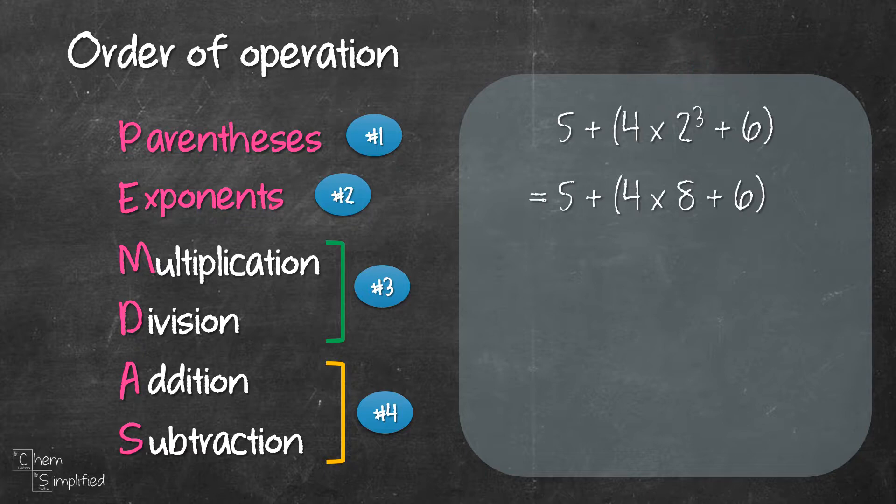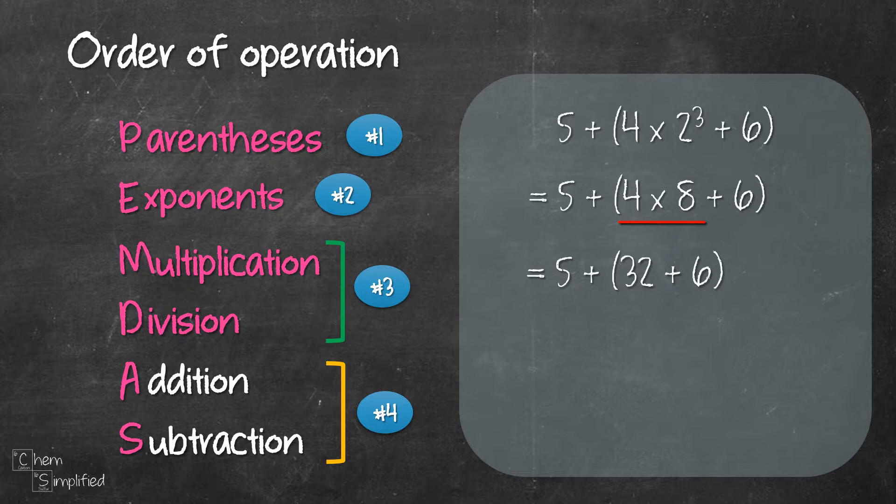So now we have 5 plus open bracket 4 times 8 plus 6. Now the third step, we look for multiplication and division. So inside the bracket we have 4 times 8 plus 6. So we will need to do the multiplication first, which is 4 times 8. Let's solve that and that will give us 32 and then plus 6.